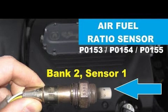The repair for the PO13E code will depend on the underlying cause. If the code is caused by a faulty oxygen sensor, the sensor will need to be replaced. If it is caused by another problem, such as a vacuum leak or a faulty fuel injector, that problem will need to be repaired. Once the underlying cause has been repaired, the PO13E code should be cleared using a scan tool to clear it from the ECU and the check engine light should turn off. It is important to have the problem diagnosed and repaired as soon as possible to prevent further damage and improve performance and fuel economy.